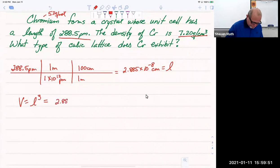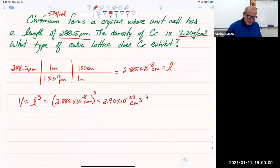So 2.885 times 10 to the negative eighth centimeters cubed. Pretty common. Going to get 2.4 times 10 to the negative 23rd centimeters cubed. Both of these answers are relatively common that you would have a length 10 to the minus eighth, and you would have a volume of 10 to the minus 23rd. So it's okay to look at something very similar to those numbers.